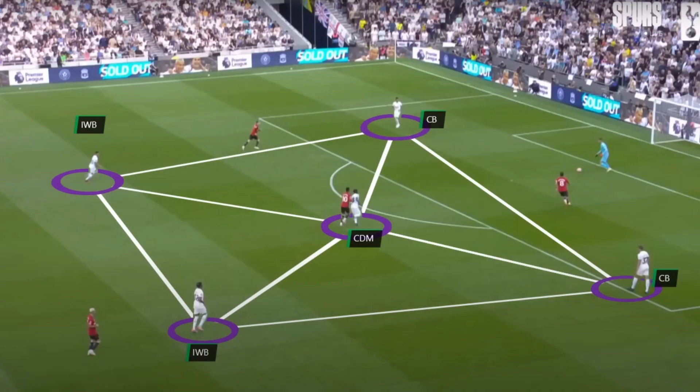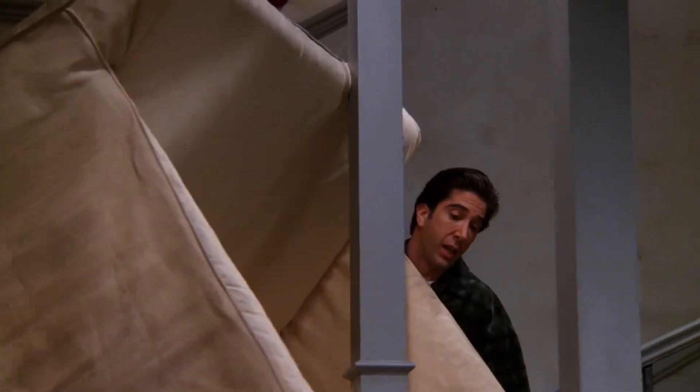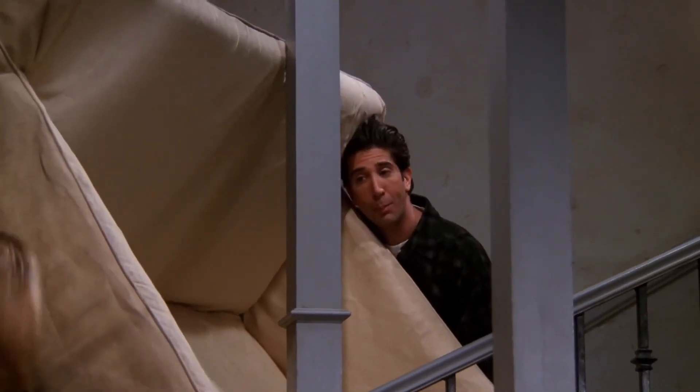Ange Postecoglou's new system at Spurs is breaking new ground again. Building out from the defence, they look to invert the full-backs to create a Man City-type box in midfield but with an extra pivot — generally Bissouma sitting in the middle. A pivot plays in the centre of two lines — say, the defence and the midfield — and generally creates passing triangles between those two lines. A pivot can also play as a number 10 role between the midfield and attack, creating passing triangles for good attacking shape.